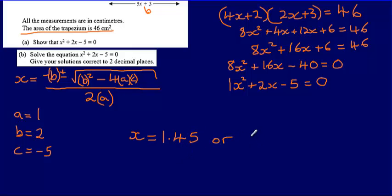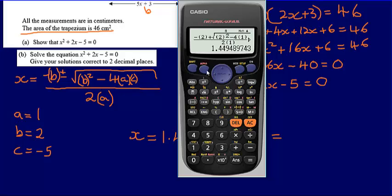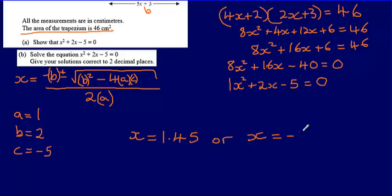For the second answer, we go back and change the plus to a minus in the formula. This gives us negative 3.45 to two decimal places. So the final answer to part B is x equals 1.45 or x equals negative 3.45.